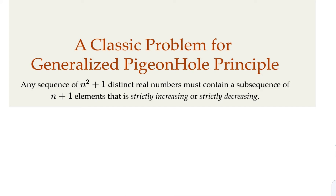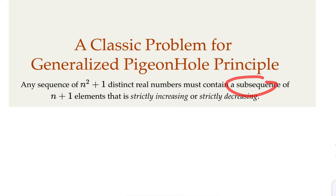We look at a problem commonly found in textbooks or exams for a discrete mathematics class. The statement is: for a sequence of n squared plus one distinct real numbers, you can always find a subsequence of length n plus one or more elements that is strictly increasing or strictly decreasing. There's a lot of information to digest here, so it's good to start with a real example.